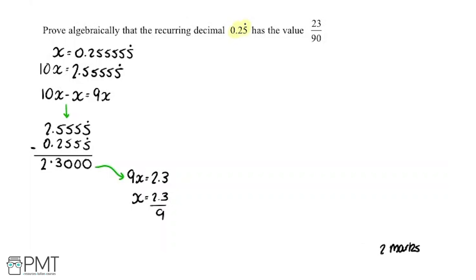To get this into a bit of a nicer form, we're going to times the top by 10 and times the bottom by 10, because remember anything you do to the top of the fraction you've got to do to the bottom of the fraction. In doing that we get that x equals 23 over 90, and that's fab because if we look back up the question, that's what we needed to show.